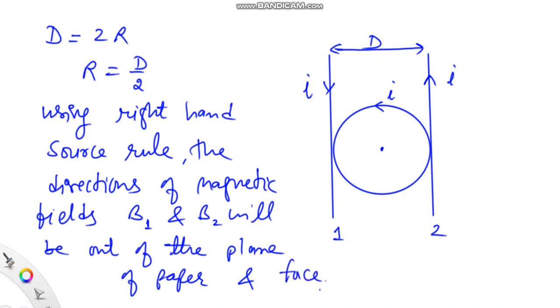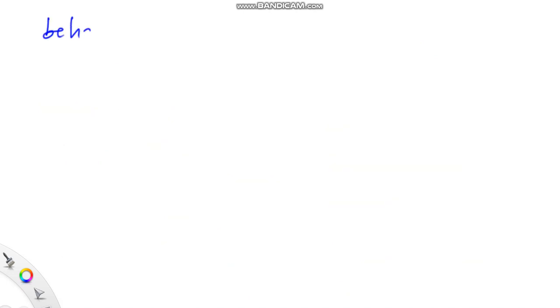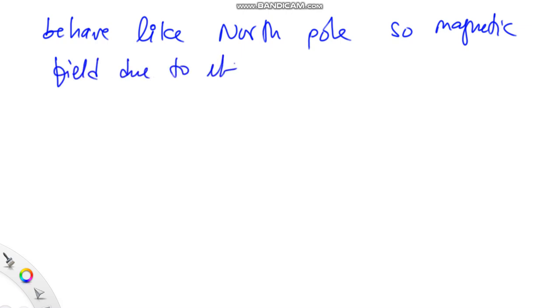If we look at this loop, this face will behave like north pole as the direction of current in it is counterclockwise. So magnetic field due to it, B3, will also be coming out of the plane of paper.